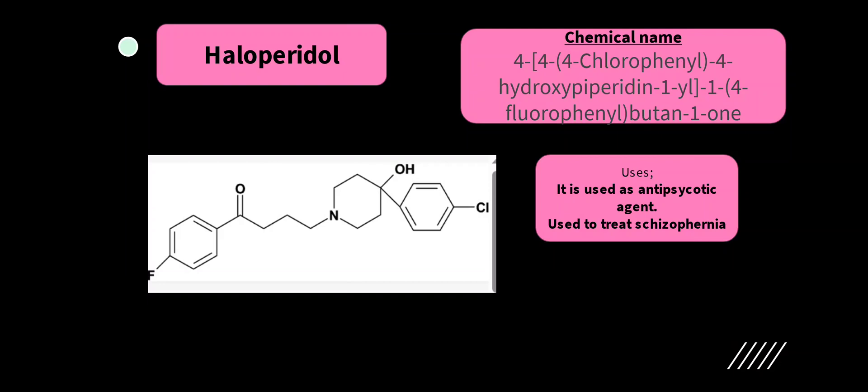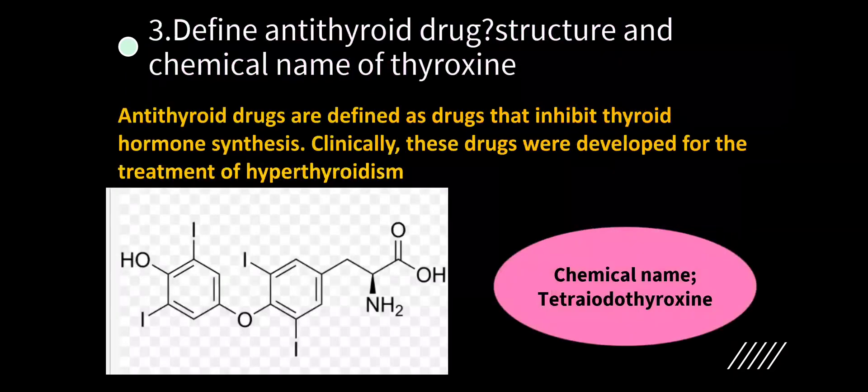For haloperidol, practice the structure. Chemical name: 4-[4-(4-chlorophenyl)-4-hydroxypiperidin-1-yl]-1-(4-fluorophenyl)butan-1-one. At least try to write the uses — if you don't know the structure or chemical name, write the uses. Haloperidol is used as an antipsychotic agent and also in the treatment of schizophrenia.